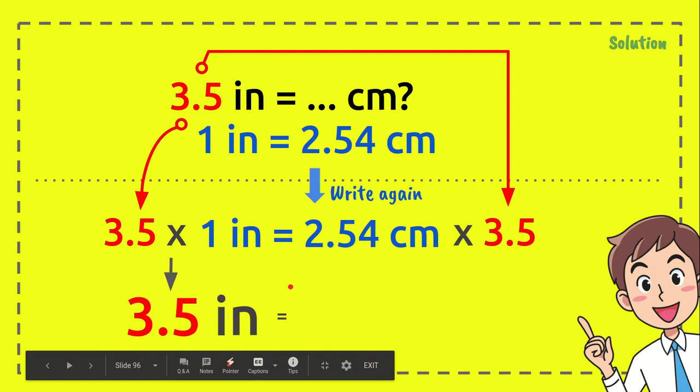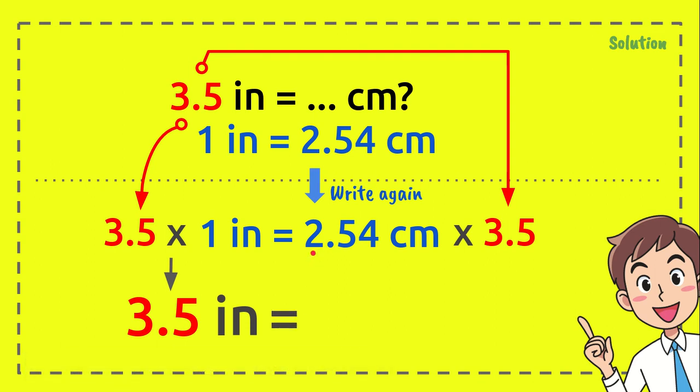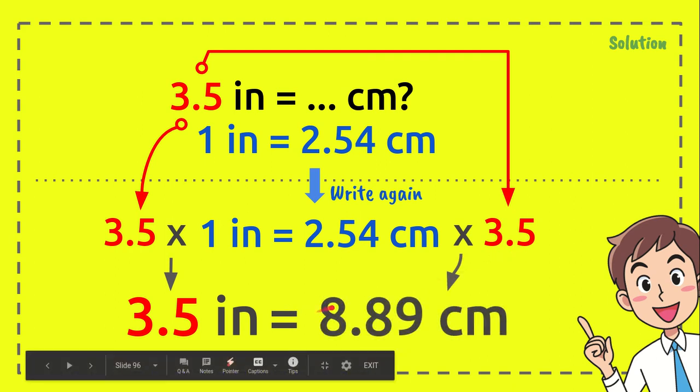And now the last step: 2.54 centimeters times 3.5 equals 8.89 centimeters. That's the answer to the question.